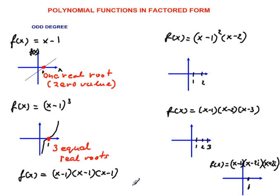Moving down to cubic function. So this is f(x) = (x-1)³. So there is one x-intercept, but in terms of roots, we will call this point (1,0) as triple root, or 3 equal real roots.